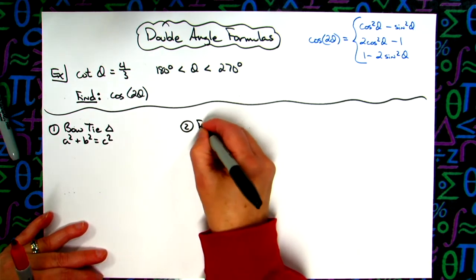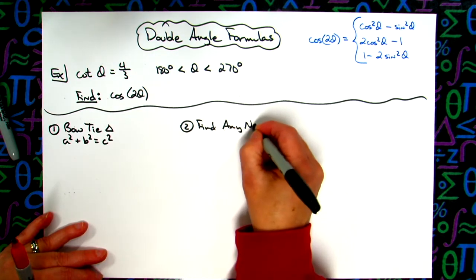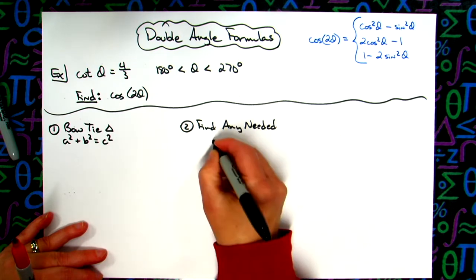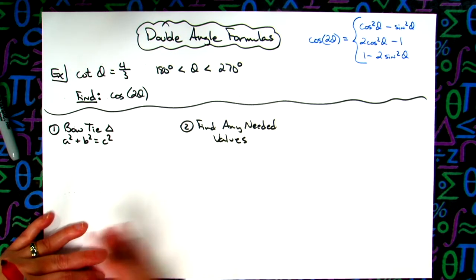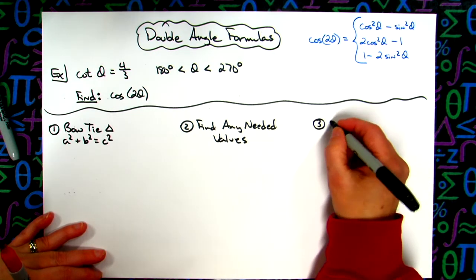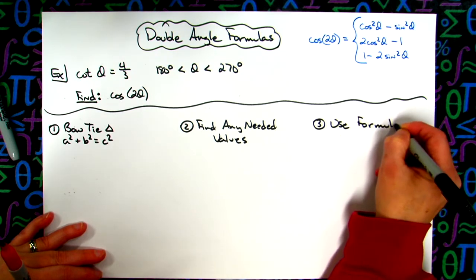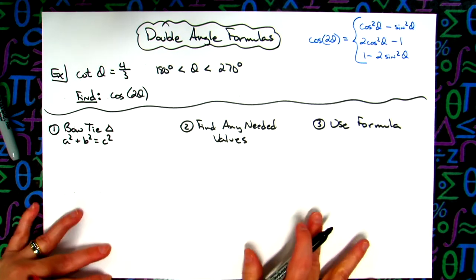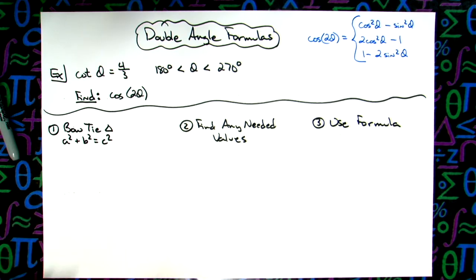So our step two will be to find any needed values. Now while I do have three steps here, we may not always necessarily do the three steps in the chronological order here, because my third step is going to be to use the formula. Sometimes I will look at the problem, decide which formula I'm going to use, and then come back and do questions one and two, that way I'll know exactly what I need, and I'll have my triangle to get those values.